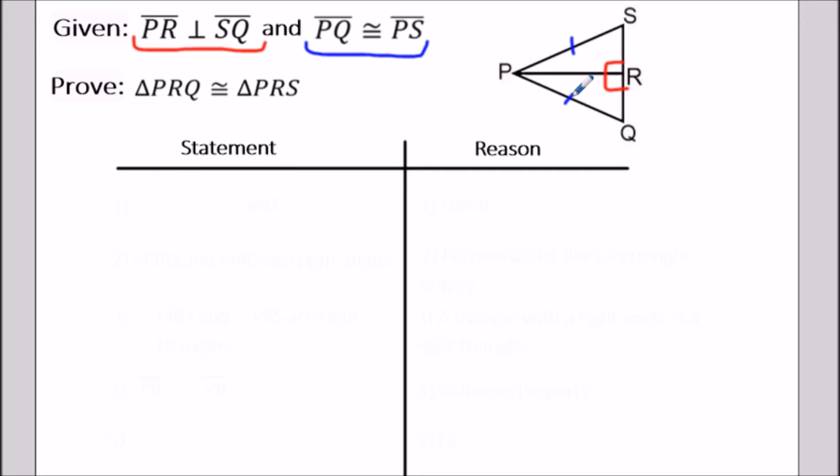The last thing we can observe is that these two triangles share a common side, which we usually mark with an X. This tells us our strategy to prove these two triangles congruent is to use hypotenuse-leg.